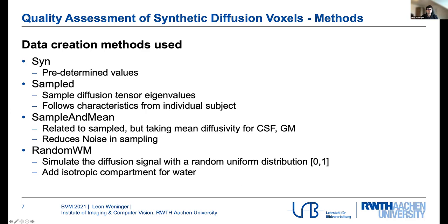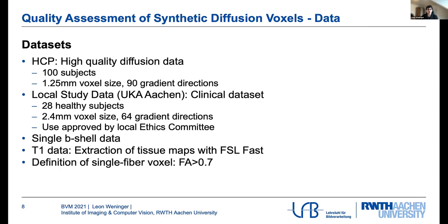In a related second step, we use the same approach for the white matter compartments. However, for the water compartment, the cerebrospinal fluid compartment, and the gray matter, we take the mean diffusivity in order to reduce noise in sampling. Lastly, one method proposed is to simulate the diffusion signal with a random uniform distribution between 0 and 1. This would mathematically comprise all possible diffusion values, but would yield a much broader set than the other methods. However, it serves as a good comparison against the model-based approaches. Here we also add one isotropic compartment to account for water in the brain.